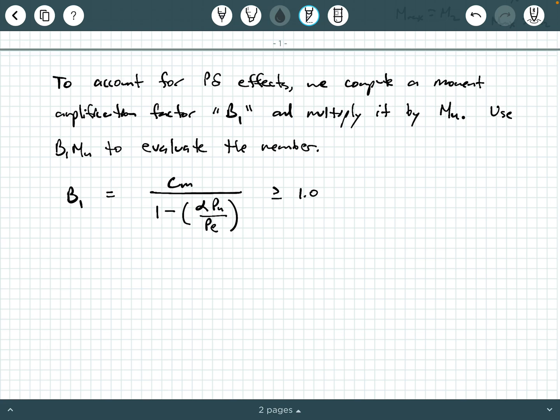CM is a factor that accounts for the moment distribution within the member's length. So CM is sometimes we call that a moment distribution factor, not to be confused with the moment distribution method that you may have learned in an analysis class.